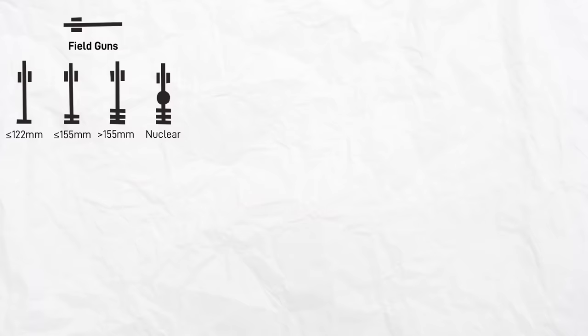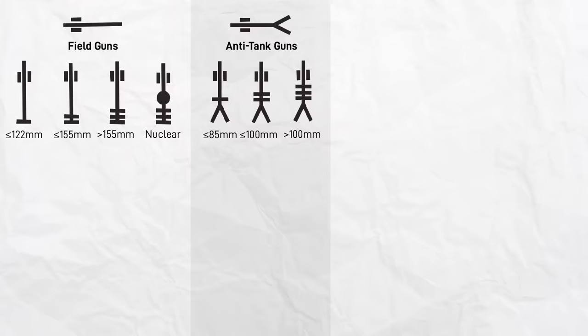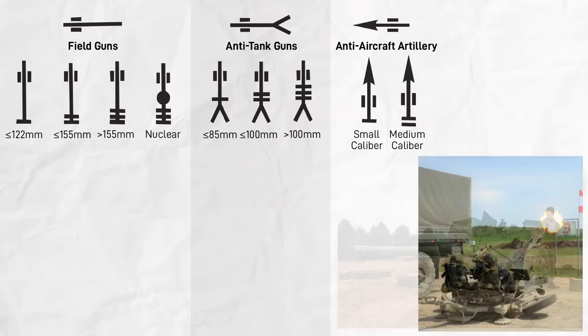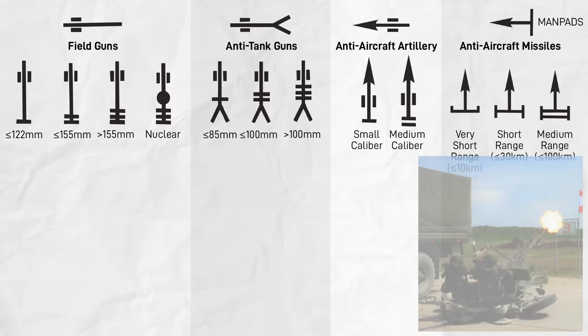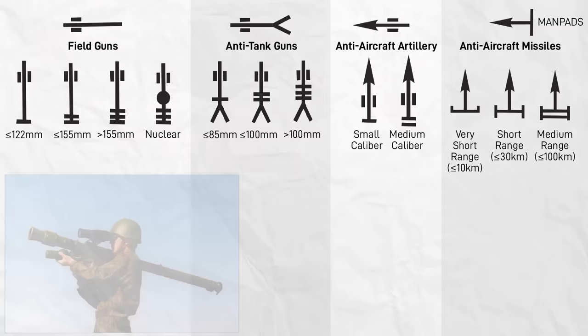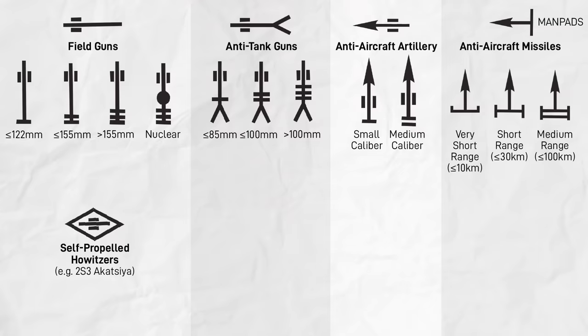Anti-tank guns are depicted by adding a little upwards-facing arrow to the base. Note that the Russians still have the MT-12 Rapira anti-tank gun in their active inventory. An arrow added to the top depicts anti-aircraft artillery. Remove the two flanking lines and add lines at the base, and it's an anti-aircraft missile system. For manpads at the lowest, to S-400 surface-to-air missiles at the highest.